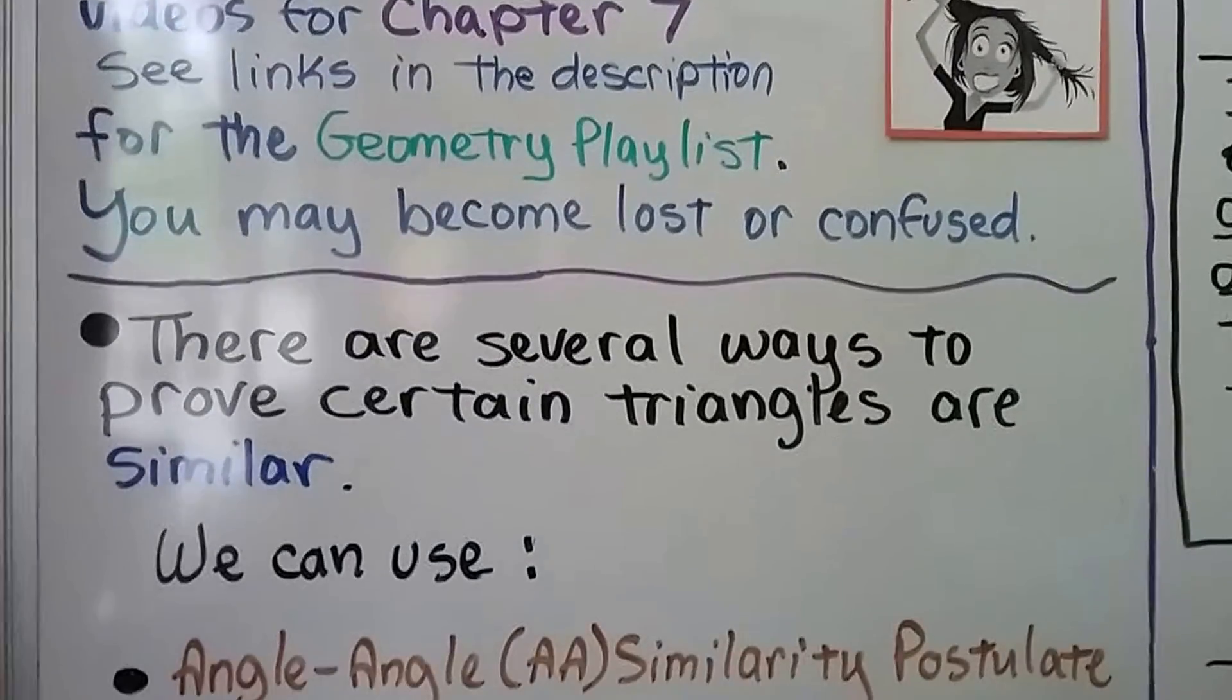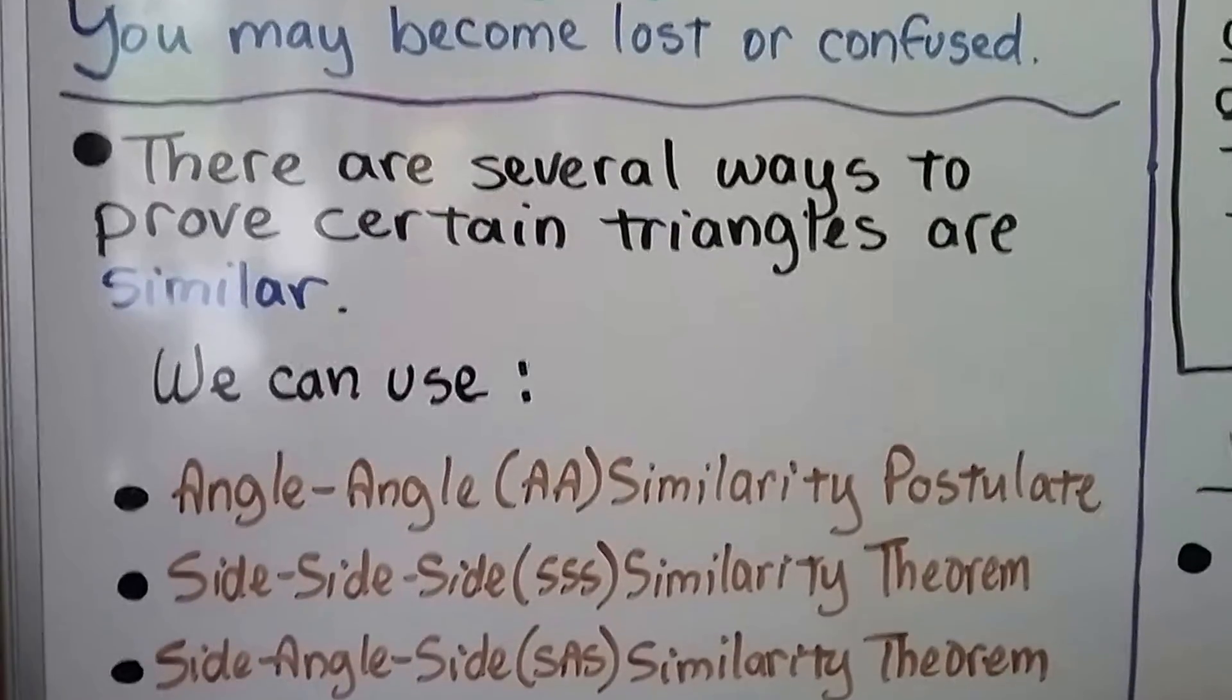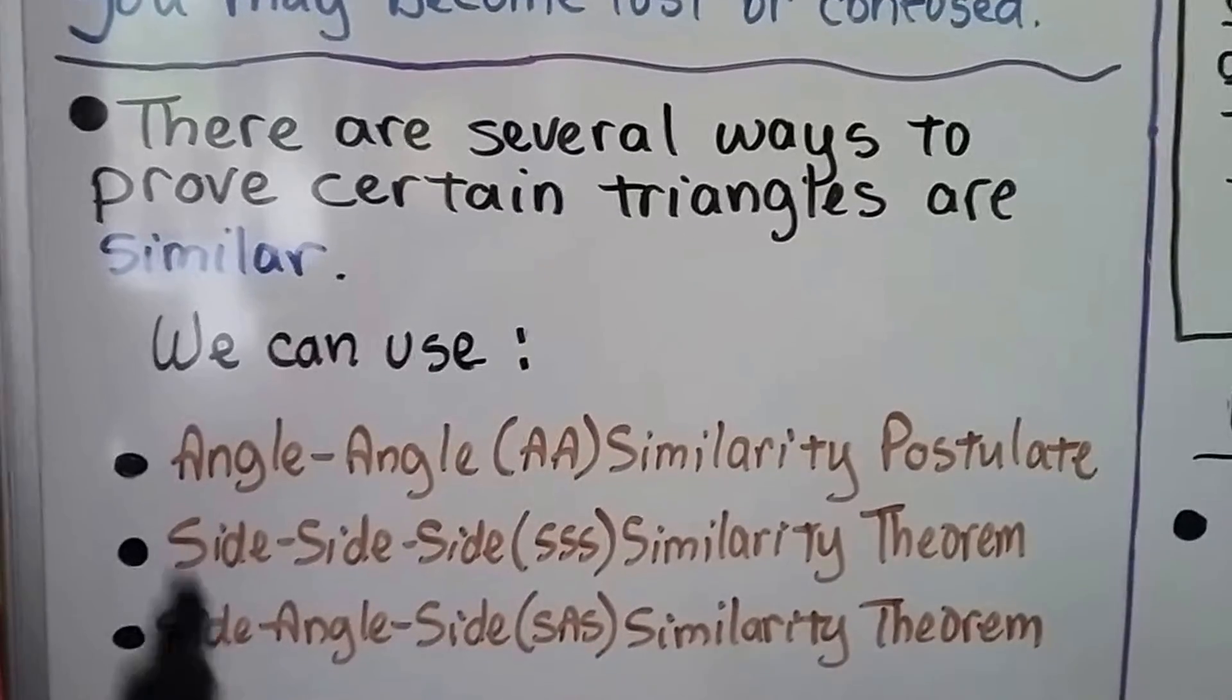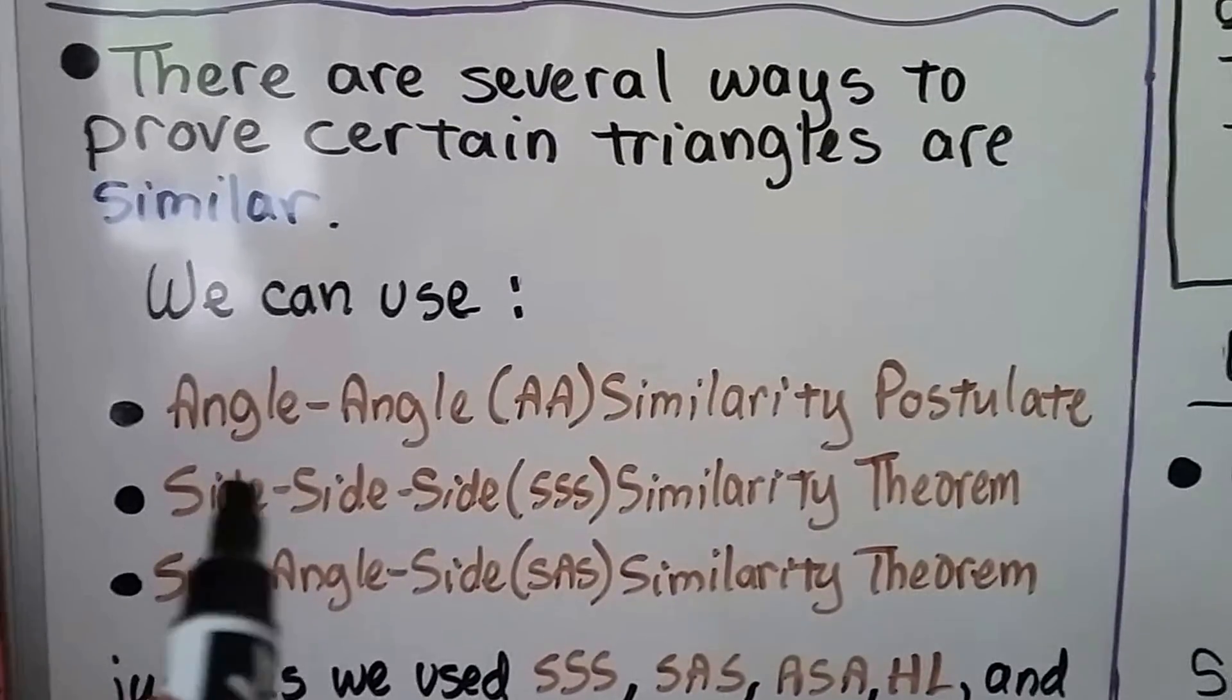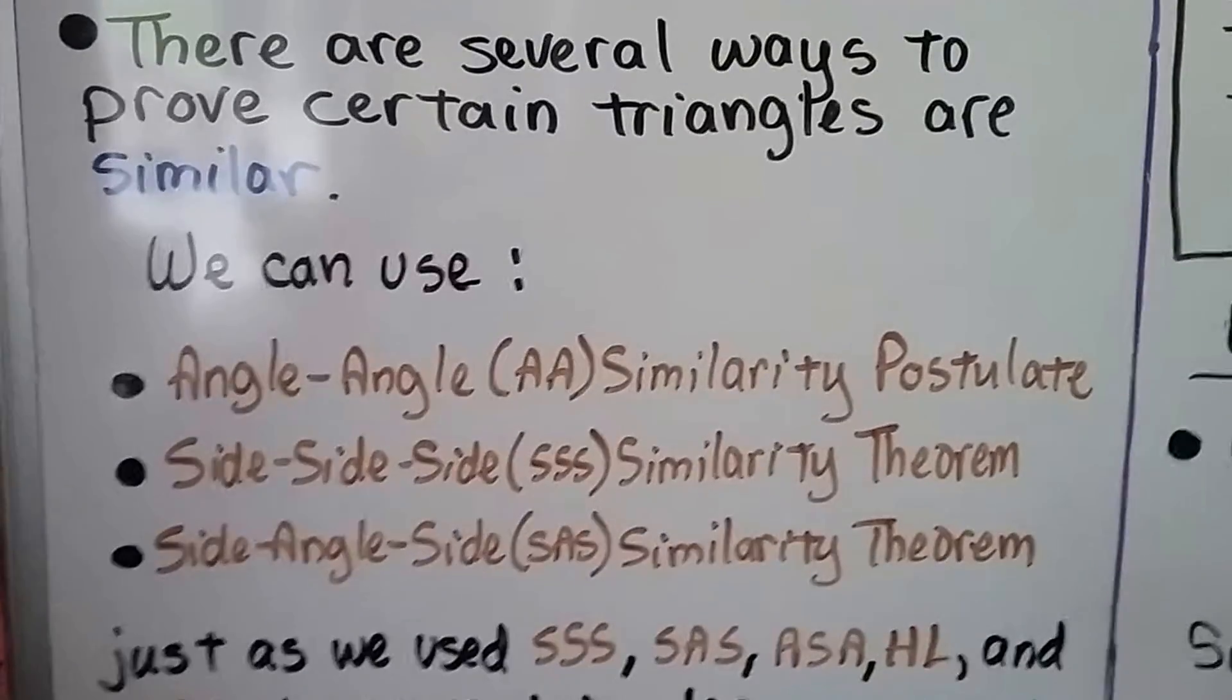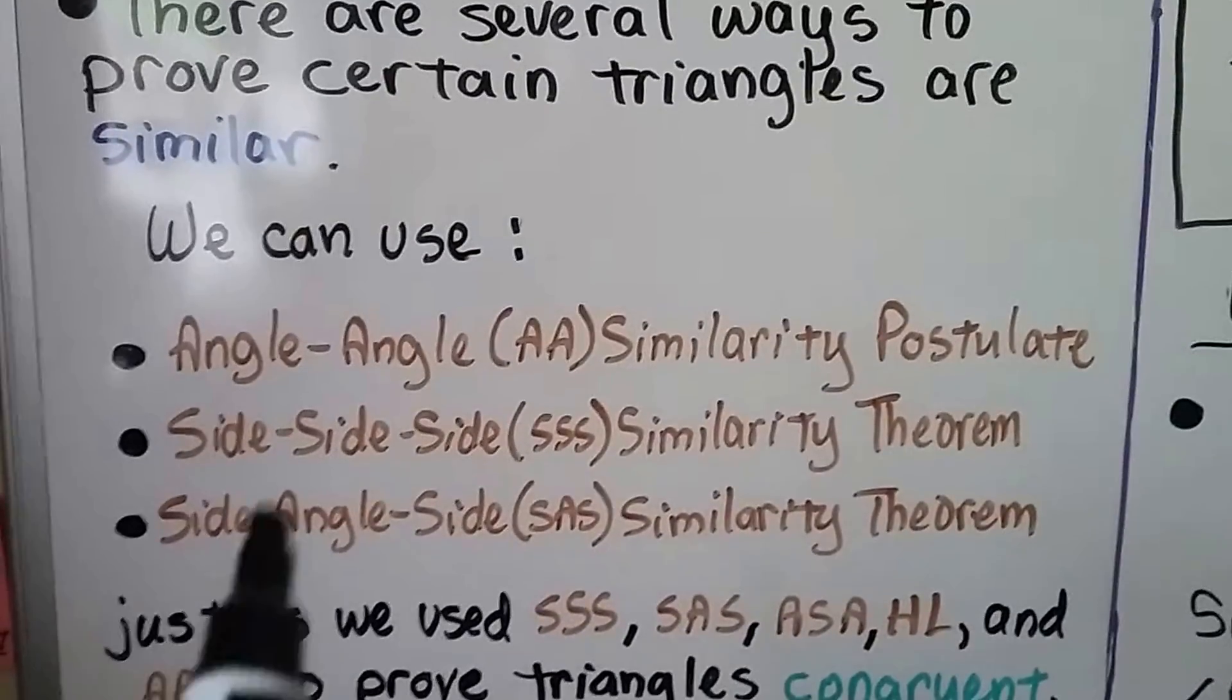There are several ways to prove certain triangles are similar. We can use angle-angle, that's AA similarity postulate. We can use side-side-side, that's SSS similarity theorem, and side-angle-side.